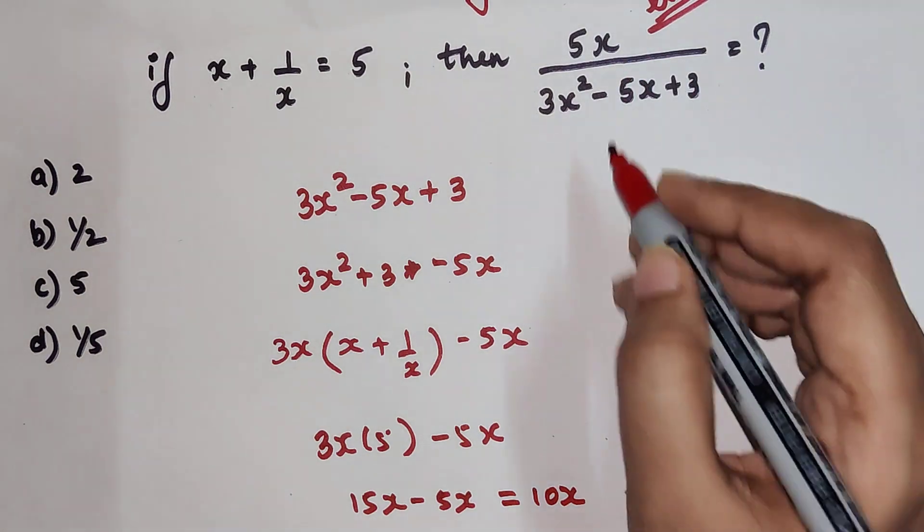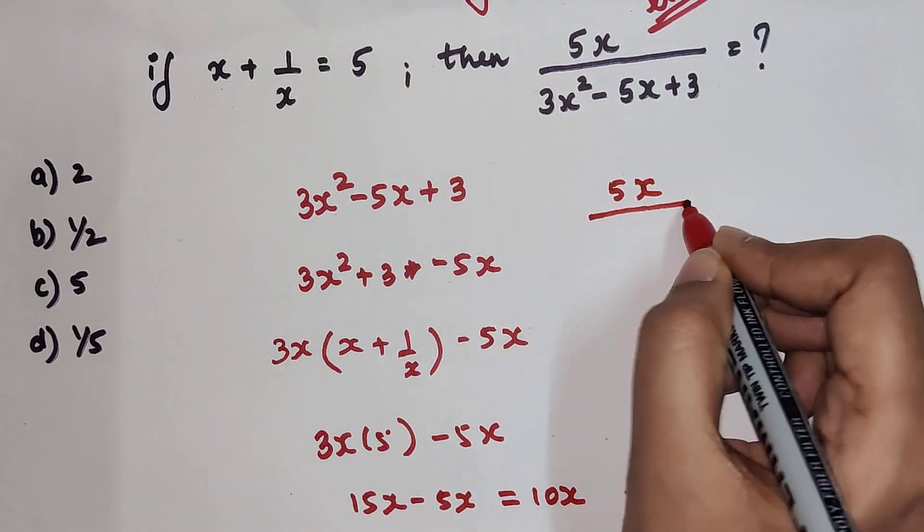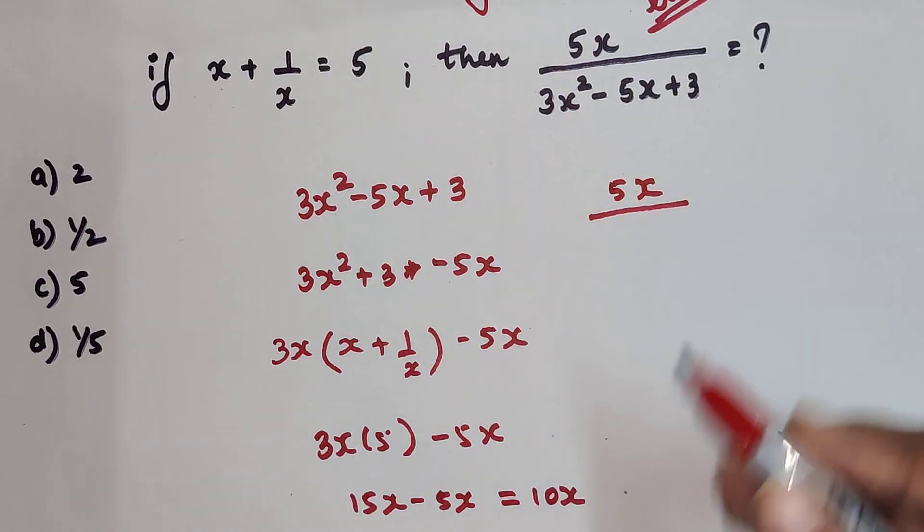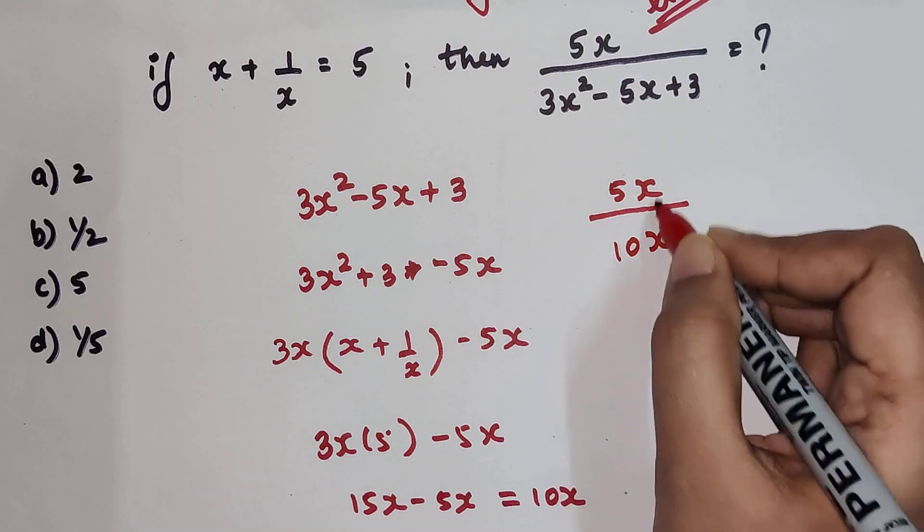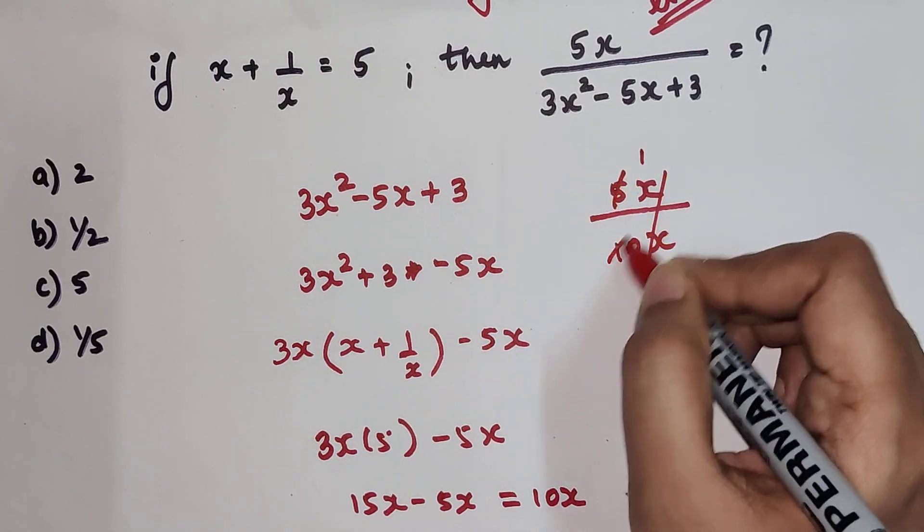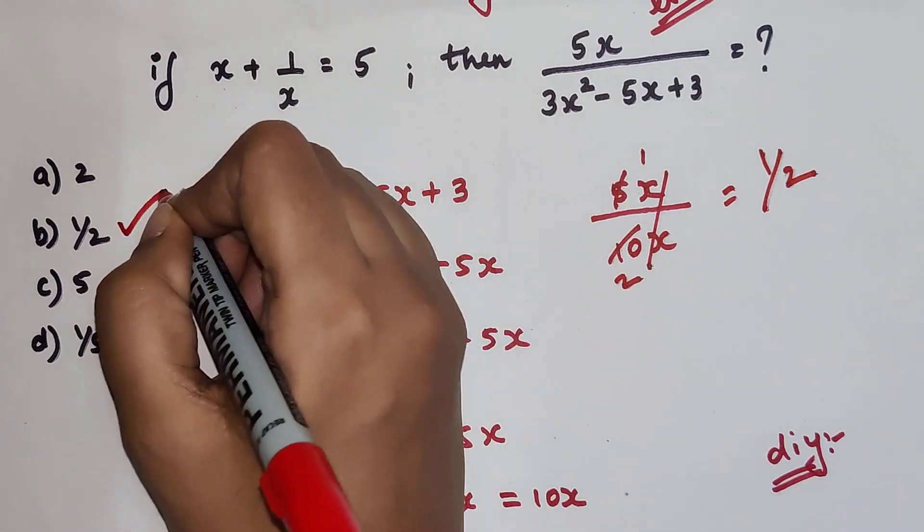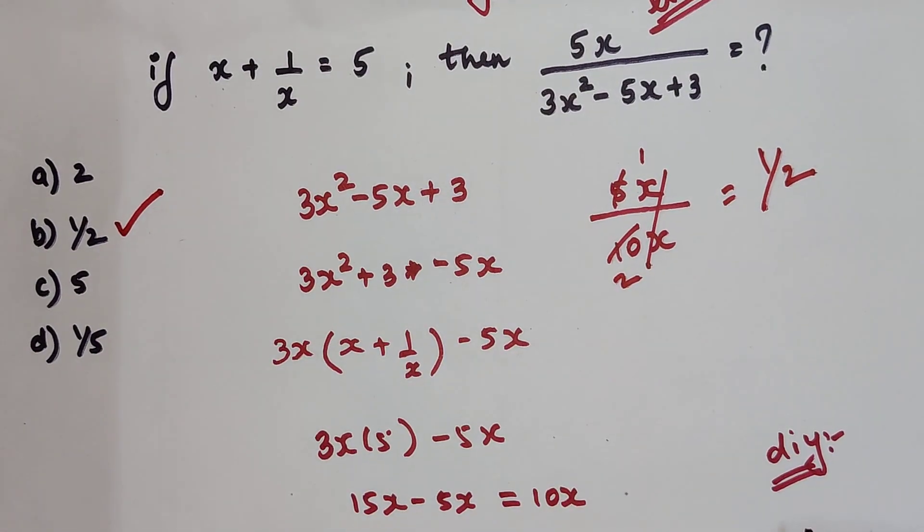So I can say my numerator, which is 5x, is now getting divided by the denominator, but instead of this denominator we will take the value which we just figured out, that is 10x. So the x's are canceling, 5 once and 5 twice, so my final answer is 1 upon 2. So option B is my correct option.